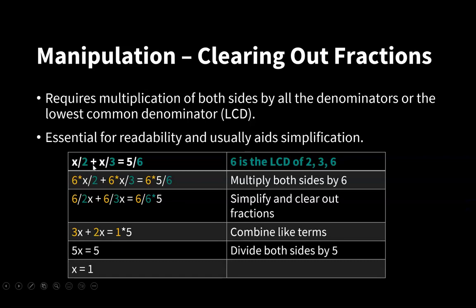We have the equation x divided by 2 plus x divided by 3 equals 5/6. 6 is the LCD of 2, 3, and 6. This means that you can multiply both sides by 6. If 6 was not the LCD, then you would have been required to multiply both sides by all denominators. Now we multiply by 6. So we have 6x divided by 2 plus 6x divided by 3 plus 6 times 5 divided by 6. We can simplify and clear out fractions now because 6 divided by 2 is 3, 6 divided by 3 is 2, and 6 divided by 6 is 1. So we are left with 3x plus 2x equals 5.